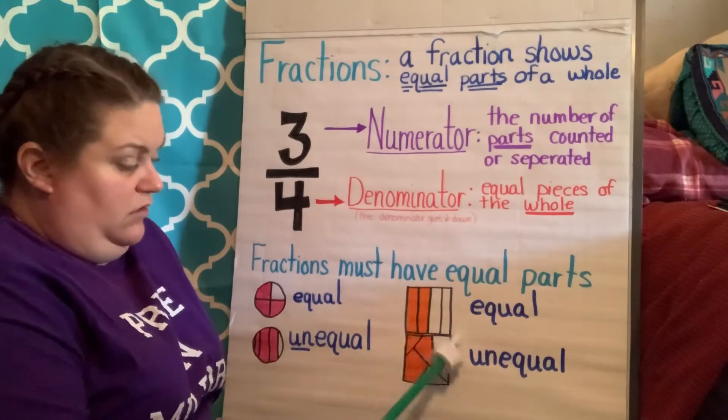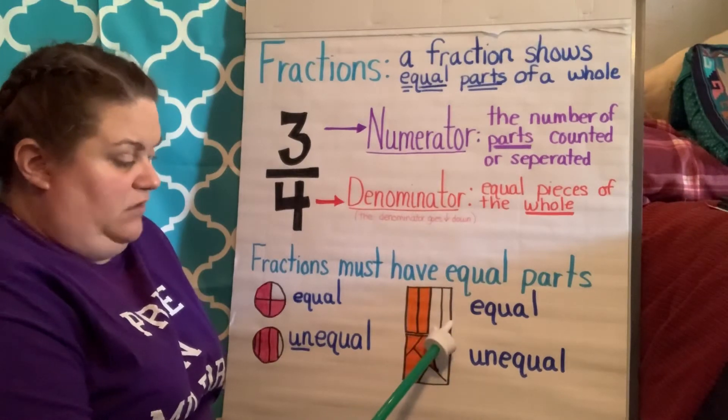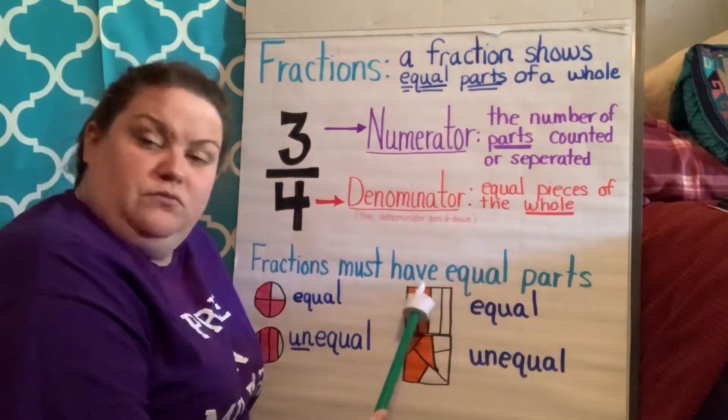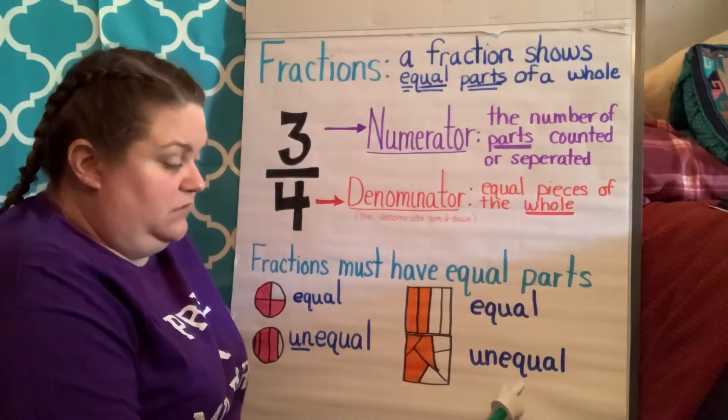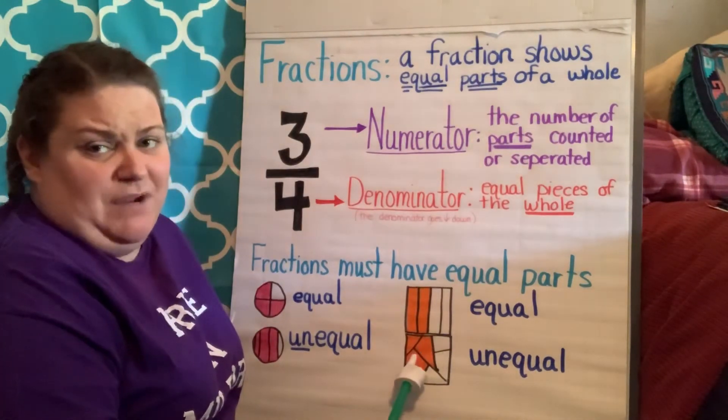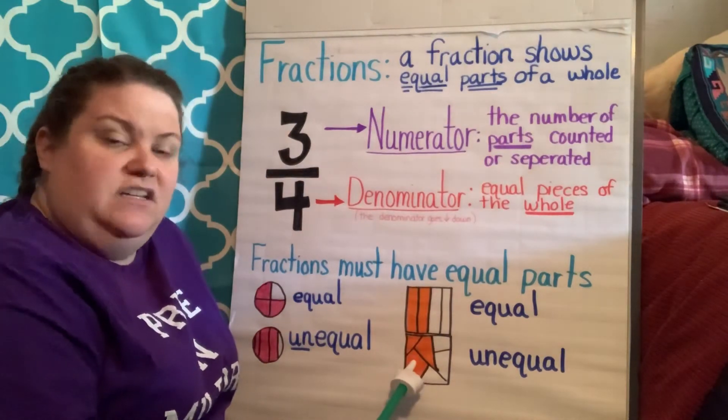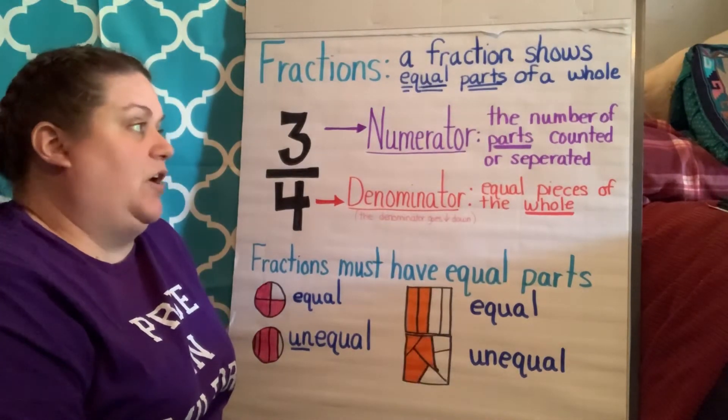Over here, we have an equally divided square. So if it's equal, we can talk about it as a fraction. This one is unequal. So we really couldn't talk about it as a fraction because none of the pieces are equal in it. So fractions must have equal parts.